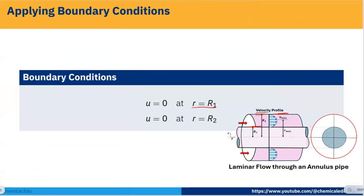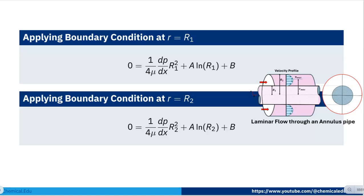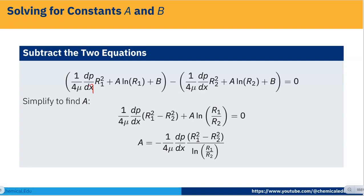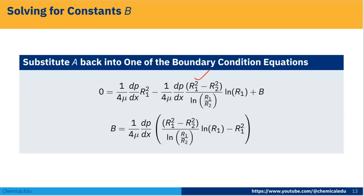Now we apply boundary conditions. Since flow occurs between two walls, the no-slip condition gives: U = 0 at R = R1 and U = 0 at R = R2. Substituting R = R1: 0 = (1/4mu)·(dP/dZ)·R1² + A·ln(R1) + B. Substituting R = R2: 0 = (1/4mu)·(dP/dZ)·R2² + A·ln(R2) + B. Subtracting the two equations cancels B, and we can solve for A: A = (1/4mu)·(dP/dZ)·(R1² − R2²) / ln(R1/R2).